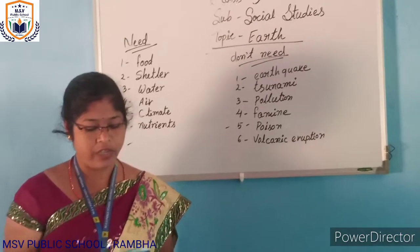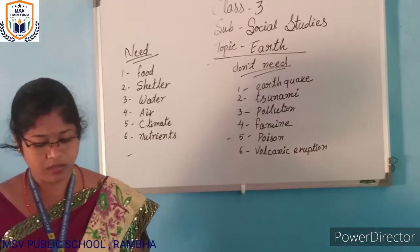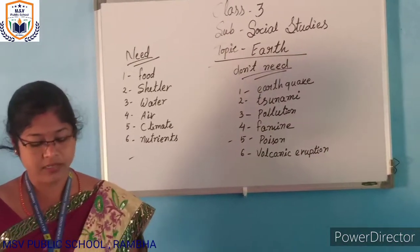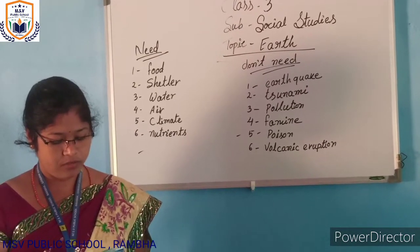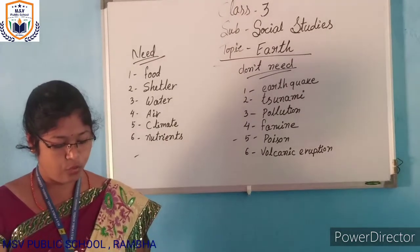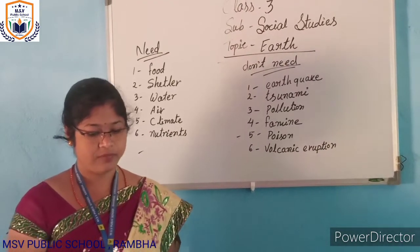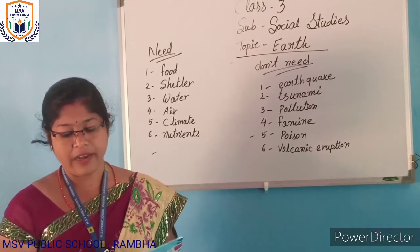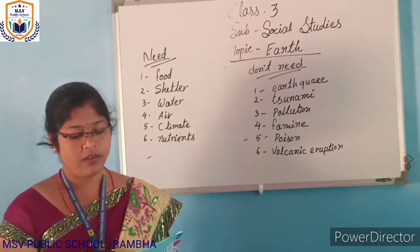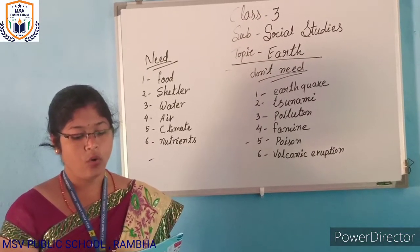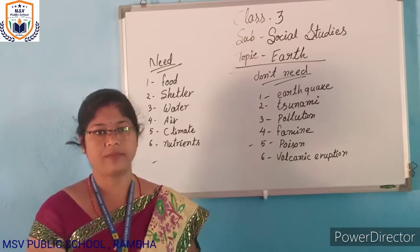Mercury, Venus, Earth, Mars, Jupiter, Saturn, Uranus, Neptune. Earth is the third planet from the sun, neither too close nor too far.